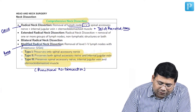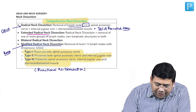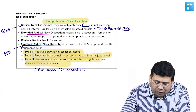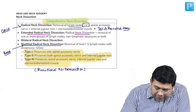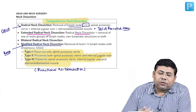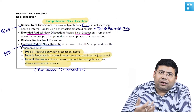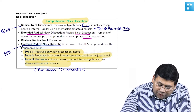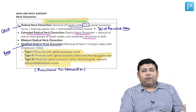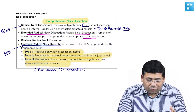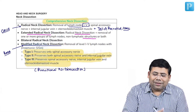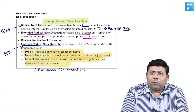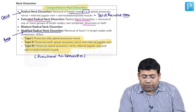When we talk about extended radical neck dissection, along with the radical neck dissection, you remove some extra lymph nodes and some non-lymphatic structures like the tail of the parotid and the submandibular gland. That is what extended radical means. Today, neither extended nor radical neck dissection is commonly performed because of excessive morbidity.